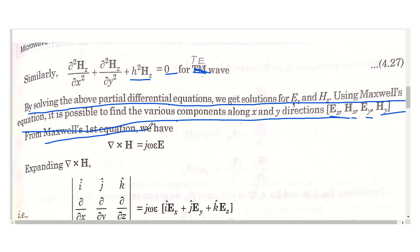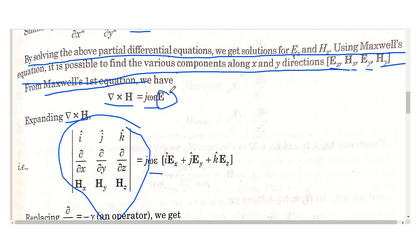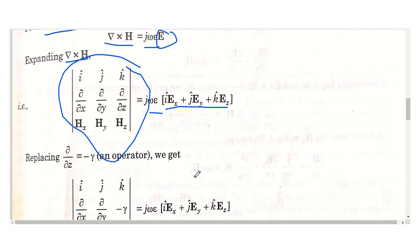For that, I consider Maxwell's first equation: curl of H-bar equals j·omega·epsilon·E-bar, also written as del cross H-bar. The curl operator gives a determinant with unit vectors i-bar, j-bar, k-bar; partial derivatives d/dx, d/dy, d/dz; and components Hx, Hy, Hz. This equals j·omega·epsilon into the electric field expanded as: i-bar·Ex + j-bar·Ey + k-bar·Ez. Since d/dz = −gamma, I replace d/dz with −gamma throughout.